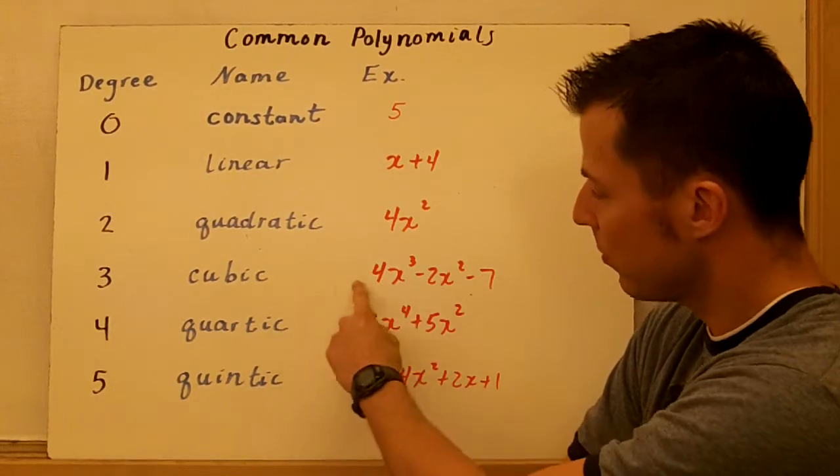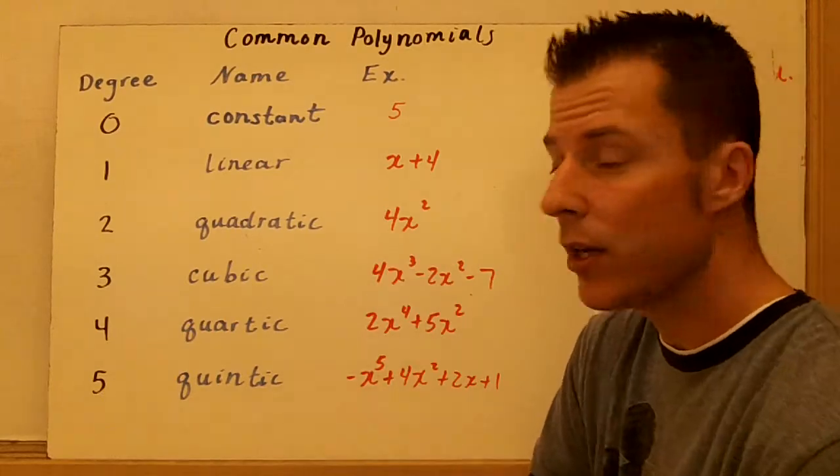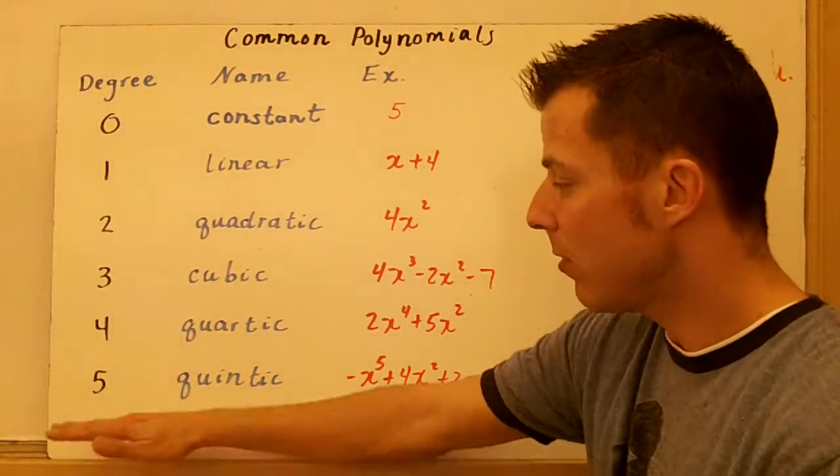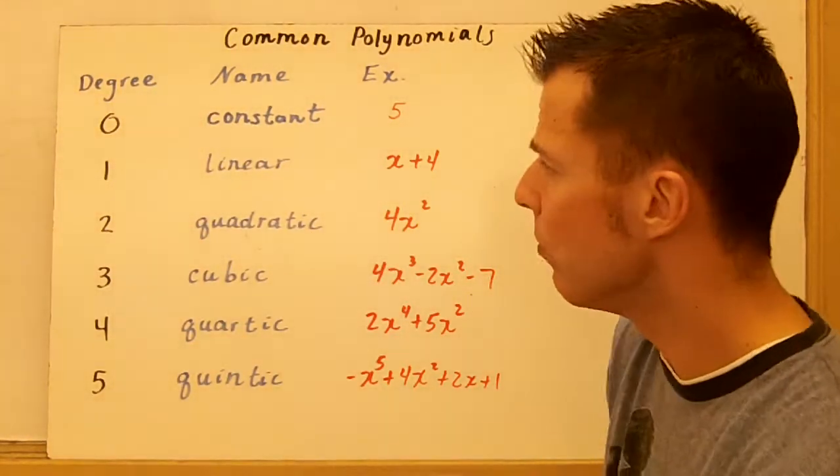Leading coefficient like a cubic: 4x³ - 2x² - 7. Quadratic, 4x². So these are some common polynomials and these are really about how much we're going to work with, just these 5, degree 5, and probably no more than degree 5.